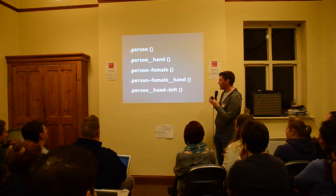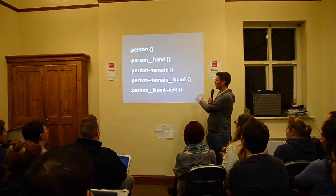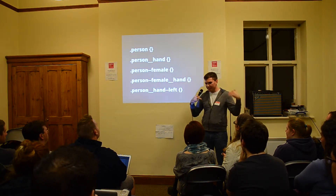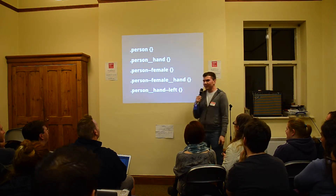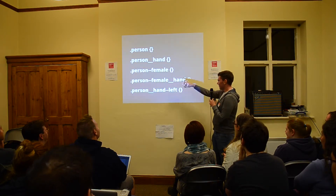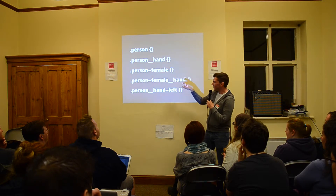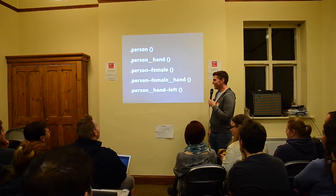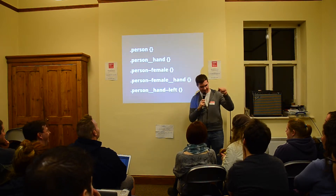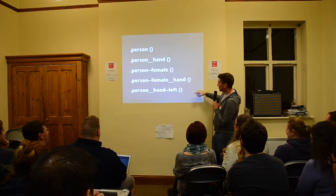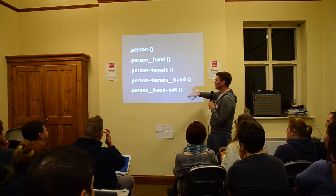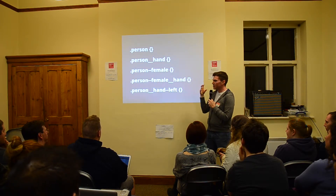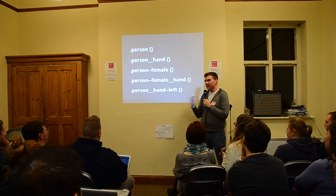An example of that in some pretty CSS is this. A person is a block — I am a block. My hand is an element of my block. And then if I were a female, that would be a modifier of me. So if you want a female hand, you've got a block, a lady, and a hand. And if you want to do left hand, you've got a block, a hand, and left hand. As you can see, there are lots of different variations, and we're separating them by double underscores or double dashes. The idea behind it is block, element, modifier, so you can use anything to split it.